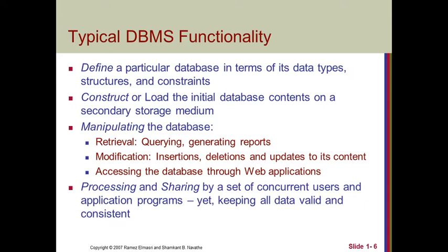Another constraint is that age cannot be more than 200 years — nobody has lived more than 200 or 300 years. So you should maintain the range for age: from birth it is day one, so you can say age ranges from 0 to a maximum of 120 or 130. This is a second condition, also called a constraint. Constraints are conditions made during the creation of a database.